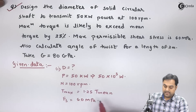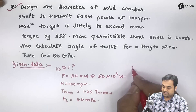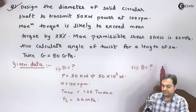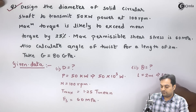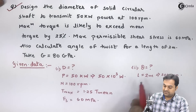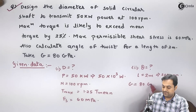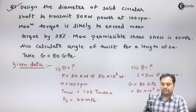The first part is to calculate the diameter, and we also need to calculate the angle of twist theta for a length of 2 meters — converting to millimeters, L is 2000 mm. Modulus of rigidity G is 80 GPa, which I will convert to 80 into 10 raised to 3 Newton per millimeter square.